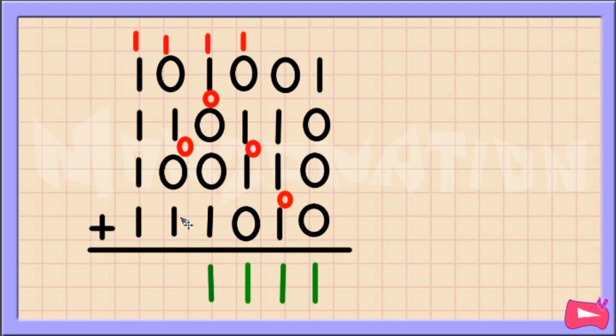0 plus 0 plus 1 equals 1. On the last column, 1 plus 1 equals 1. Carry 1. Bring down 1.